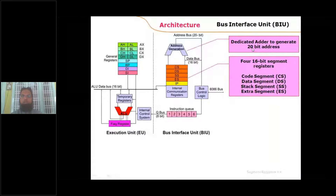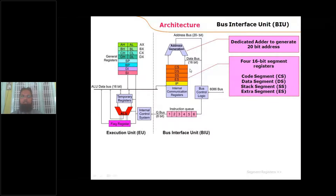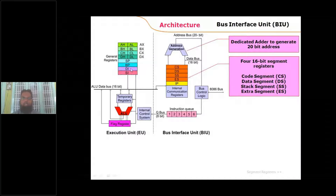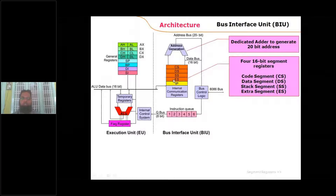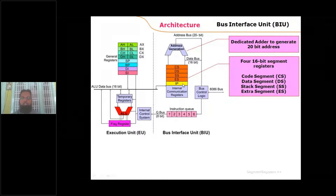The segment address and offset address are processed to convert them into a 20-bit physical address. The segment address is collected from the segment registers, and the offset address from the general/index/pointer registers. For the code segment (CS), the pair is the Instruction Pointer (IP); for DS, it is SI; for SS, it is SP; and for ES, it is DI.